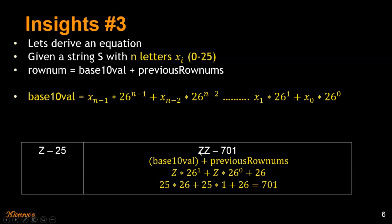It boils down to x1 into 26 power 1 plus x0 into 26 power 0. So in place of x1, we have Z and x0, we have Z. That's how we computed 701.